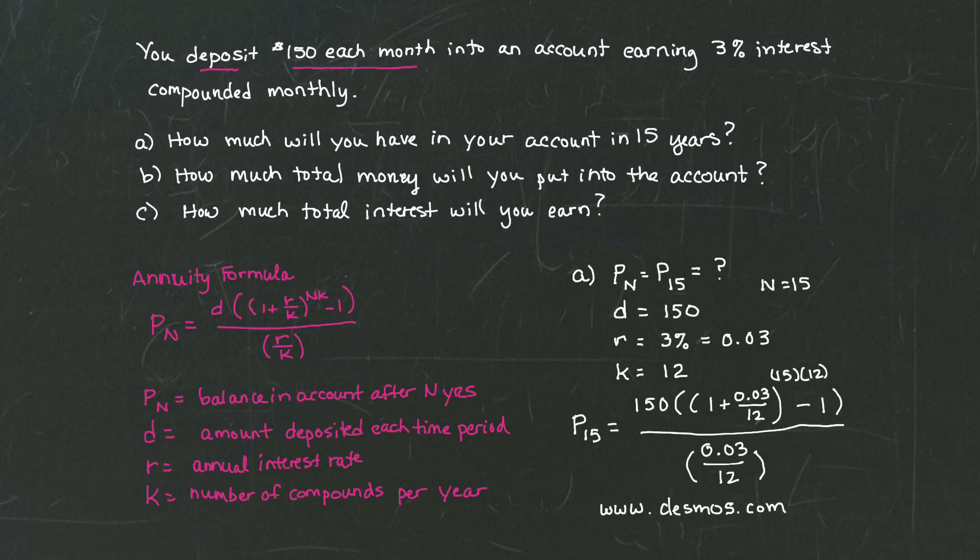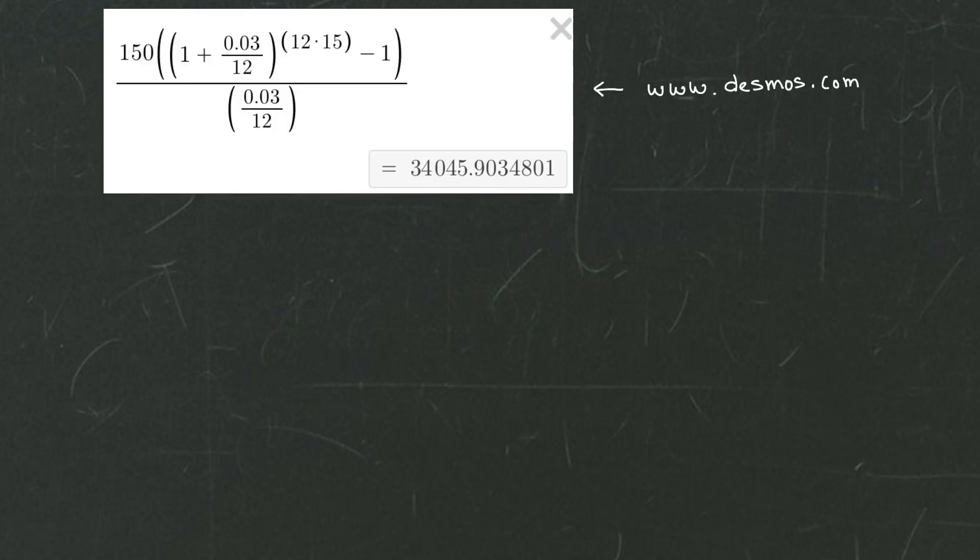Following that suggestion, I went online onto Desmos, and I typed in the following calculation. I typed 150 times the quantity of the quantity of 1 plus 0.03 over 12 raised to the 12 times 15 minus 1 parentheses closed all over 0.03 divided by 12. And Desmos spit out this number right here. That's $34,045 and then a farther decimal. This expression is the amount in my account or the balance in my account in 15 years investing 150 at 3% compounded monthly.